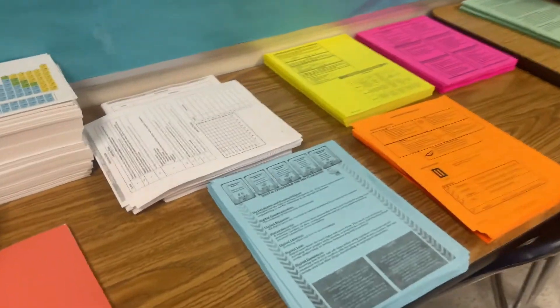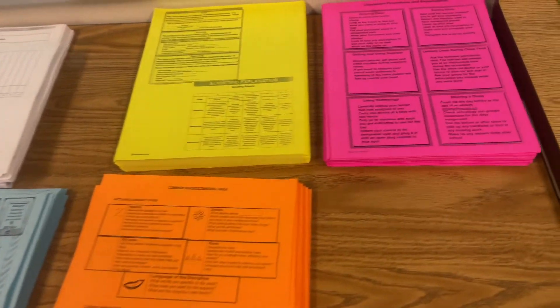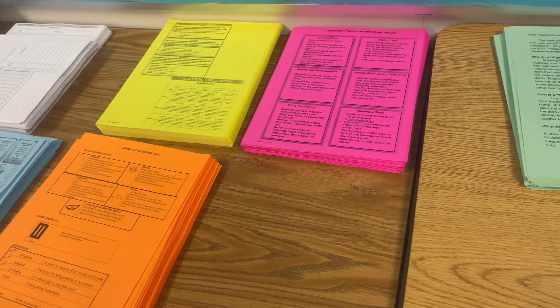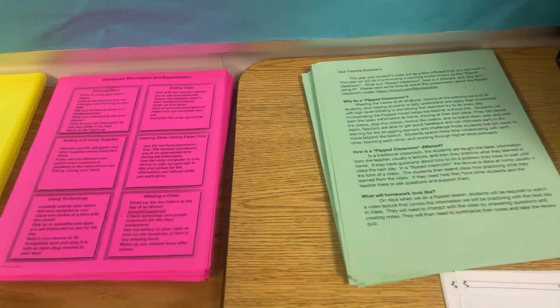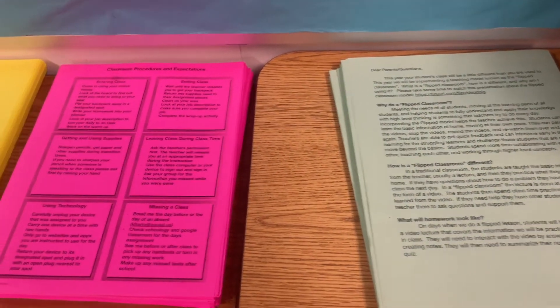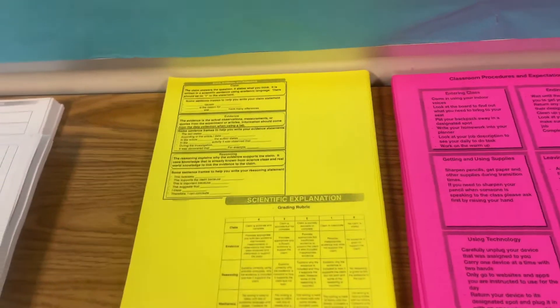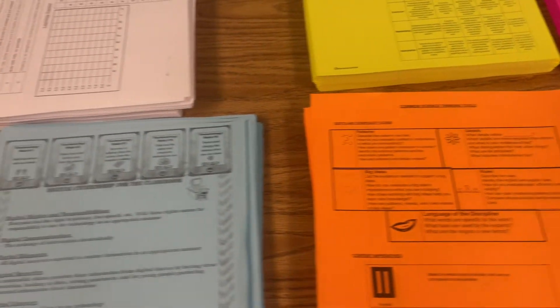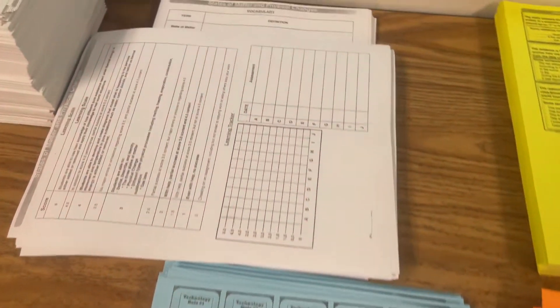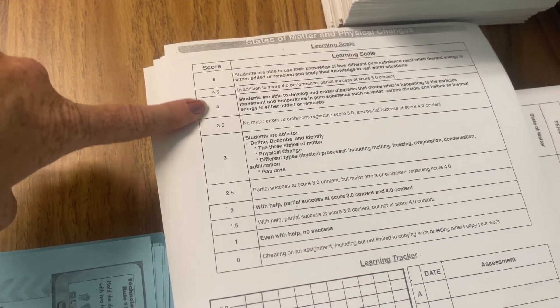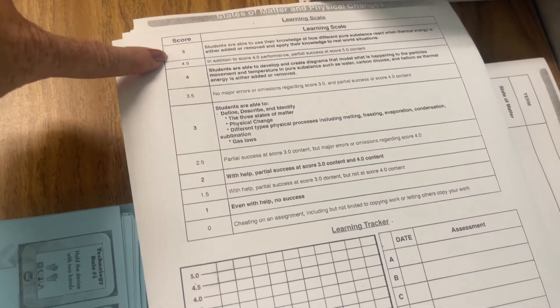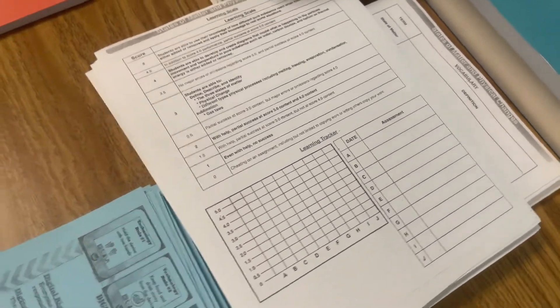Here I have my stack of papers all ready to go. I put them in different colors so it's easy for students to find exactly which one they need. I have my syllabus, my flipped classroom parent letter, classroom procedures, the CER and rubric, common thinking tools they'll be using, their digital citizenship, and their first learning skills for their first standard where my students actually track. It tells them what they need to do to hit the standard and go above, and they'll be tracking their progress with assignments as we go.